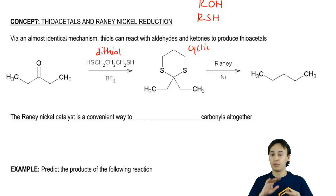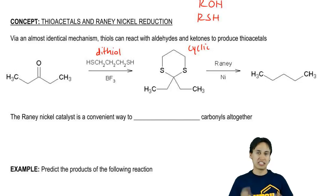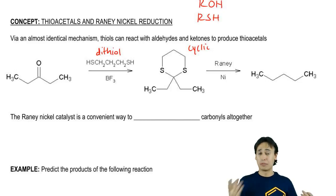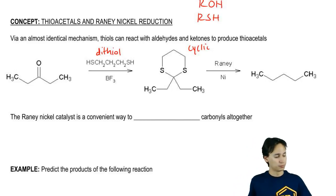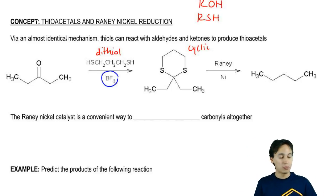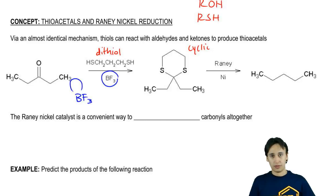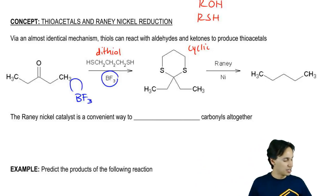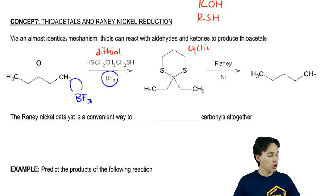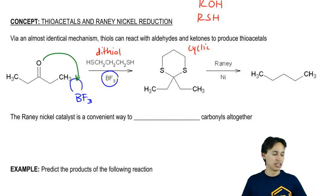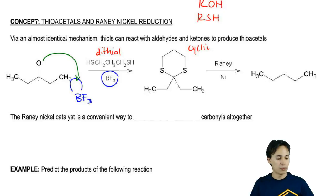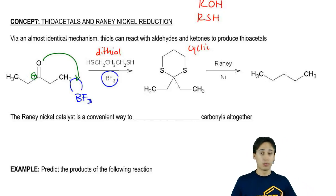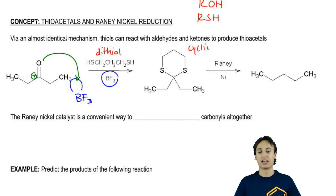The biggest difference between this reaction and an acetal is that we do use a specific acid. Instead of how for acetals I told you it doesn't really matter — it could be any proton-donating acid — for thioacetals, we typically use BF3, which is actually a strong Lewis acid. The biggest difference between this mechanism and the Brønsted-Lowry mechanism for acetals is that in your first step, instead of protonating the O, the O actually just starts to donate its electrons to the empty orbital, which makes a resonance structure with a positive charge. Other than that, the mechanism is really pretty much identical — it's just that you're using a Lewis acid instead of a Brønsted-Lowry acid.